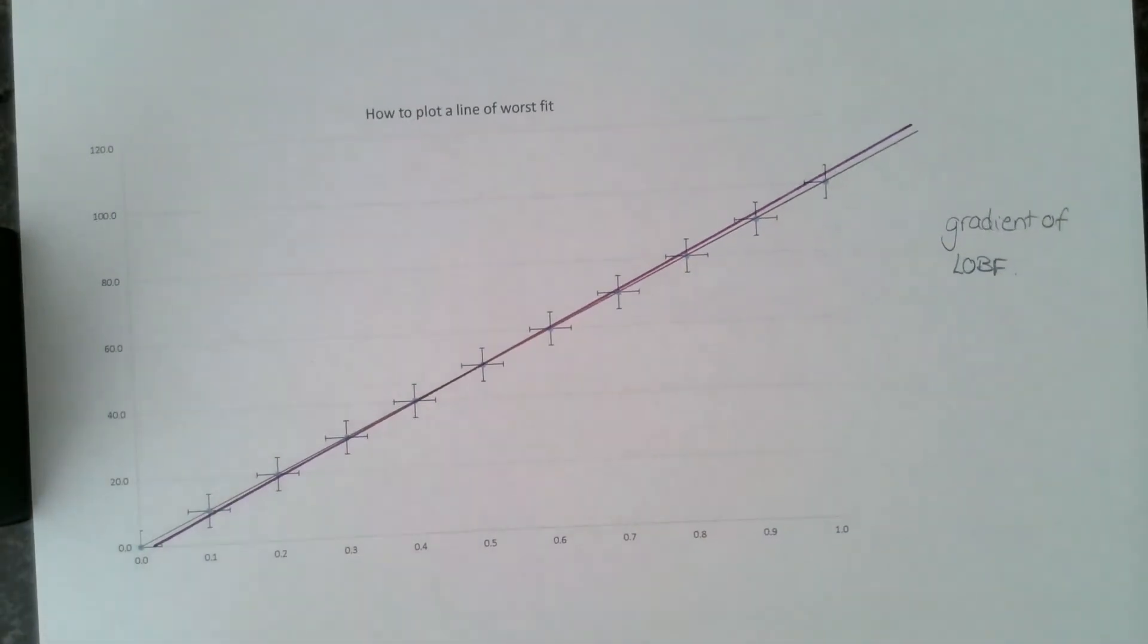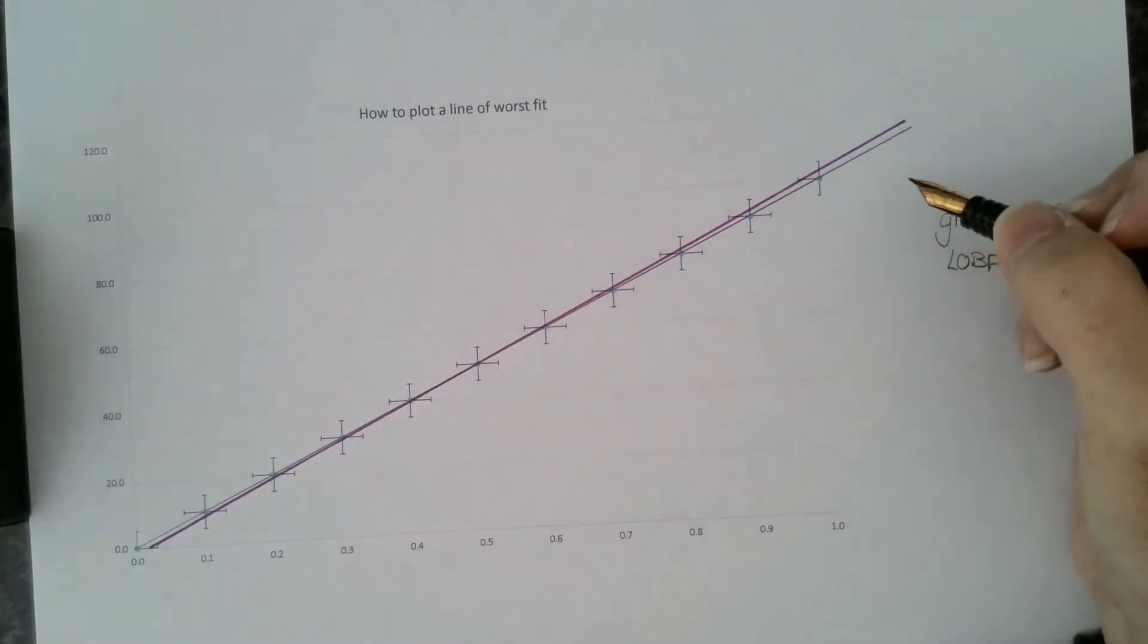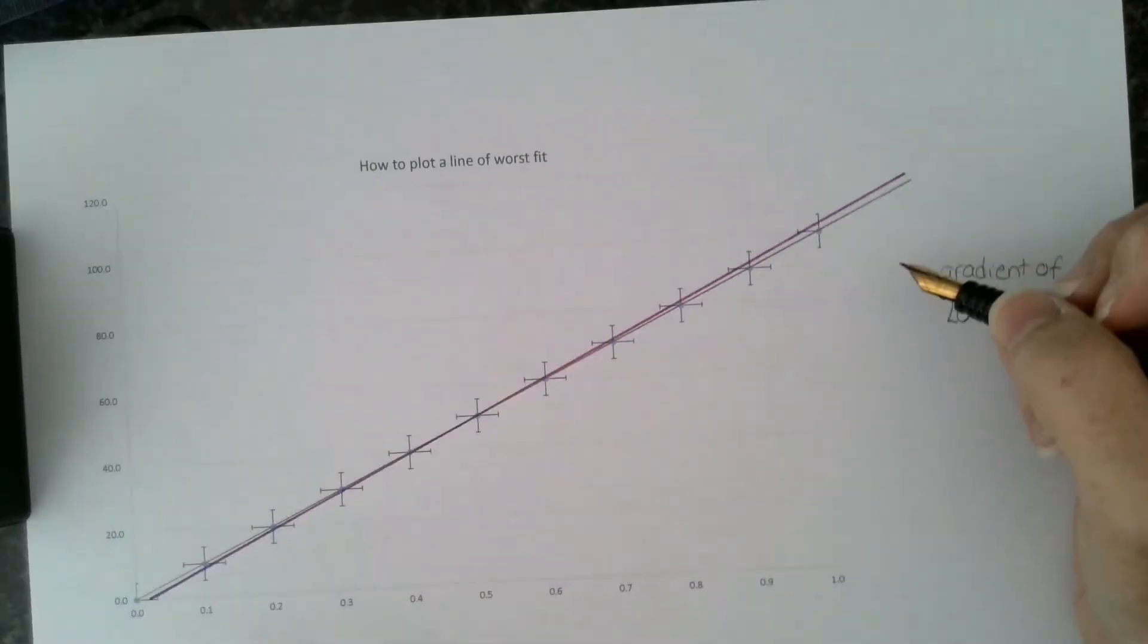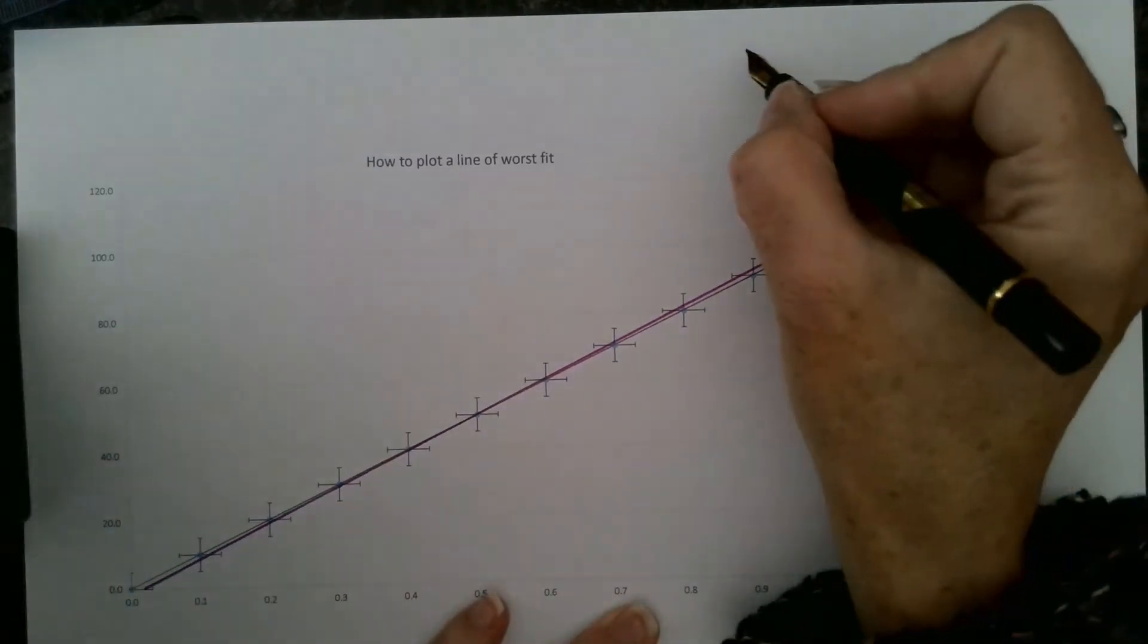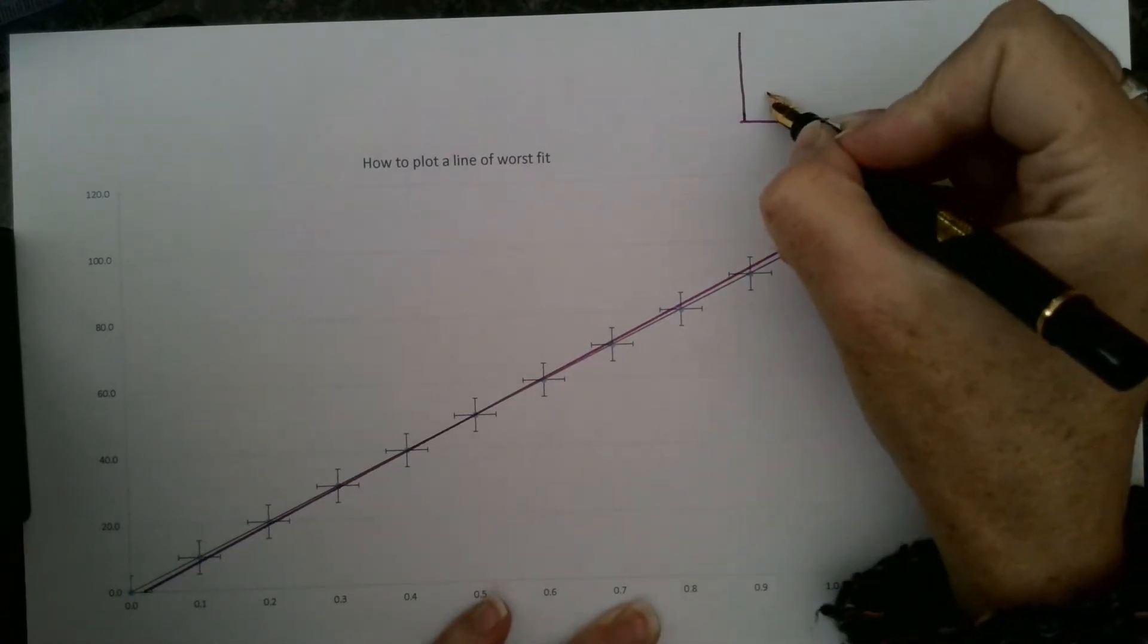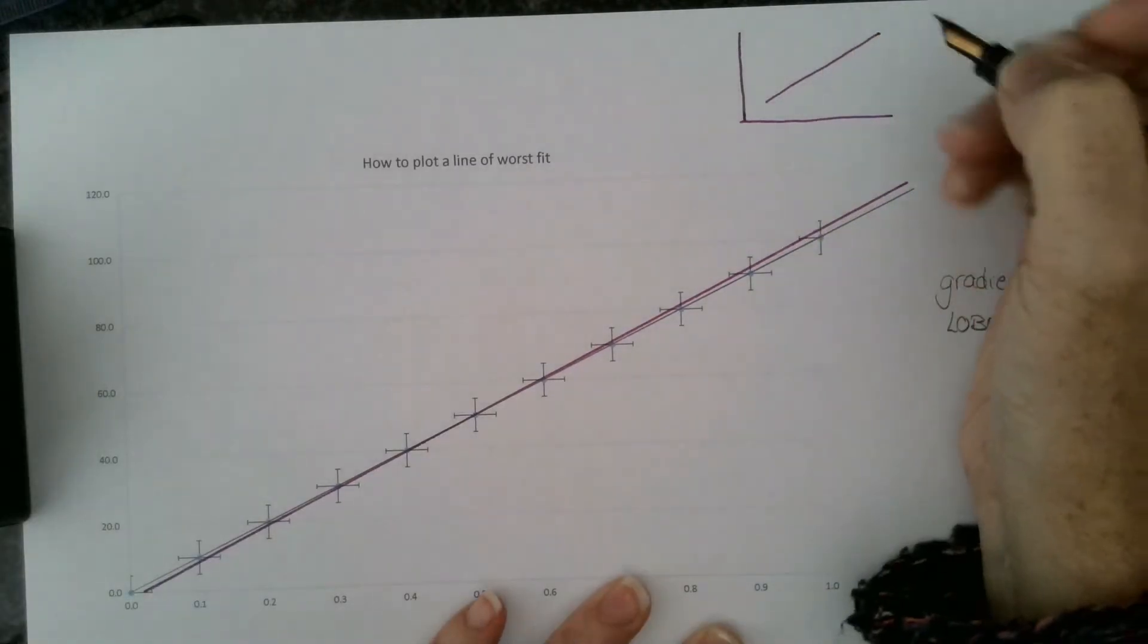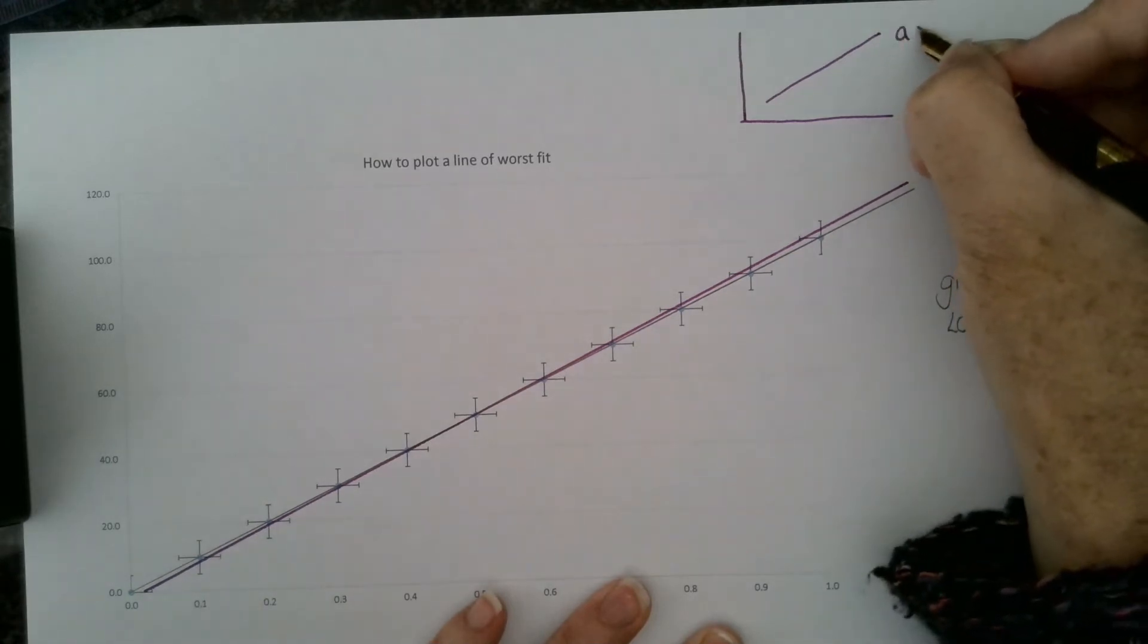Hopefully you can see there's a difference between the line of best fit and the line of worst fit. If you've drawn your graph correctly and your line of best fit correctly, then you should have ended up with a situation where, if I do a little sketch here, you have your line of best fit exactly correct.